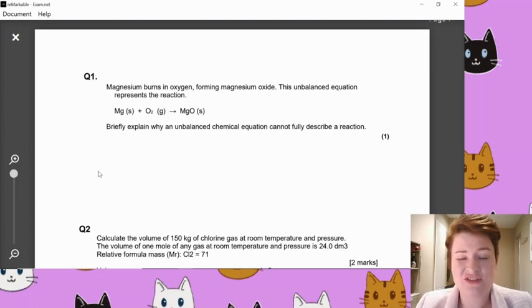Okie dokie. So let's have a look. Now we've seen actually the first part of this question in section A. This is a continuation and a lot of that will happen in this paper. Briefly explain why an unbalanced chemical equation cannot fully describe a reaction. Now, if you've been quite vague, if you've used the words amounts, I've probably not given you the mark here. So this question was worth one mark.